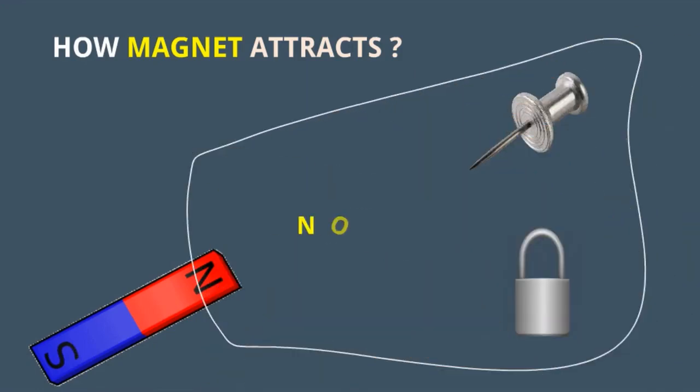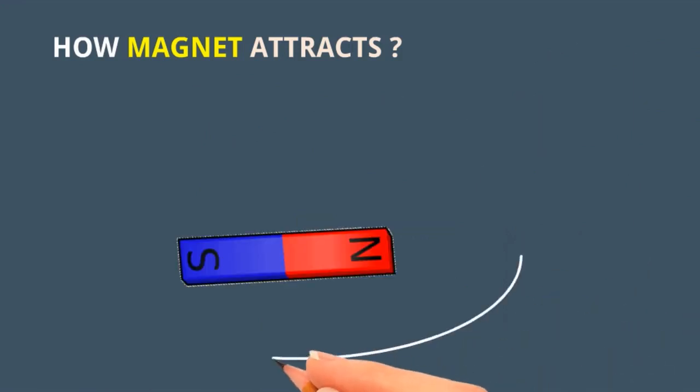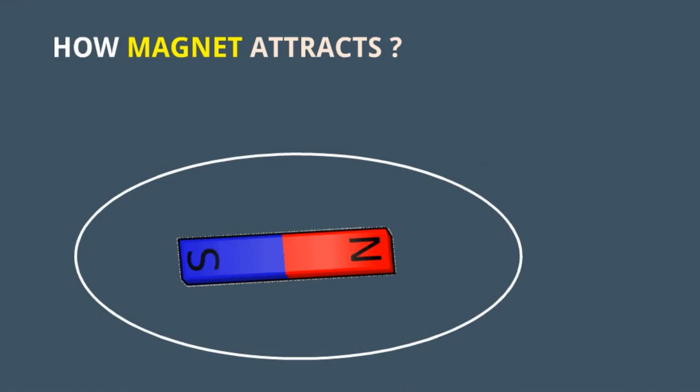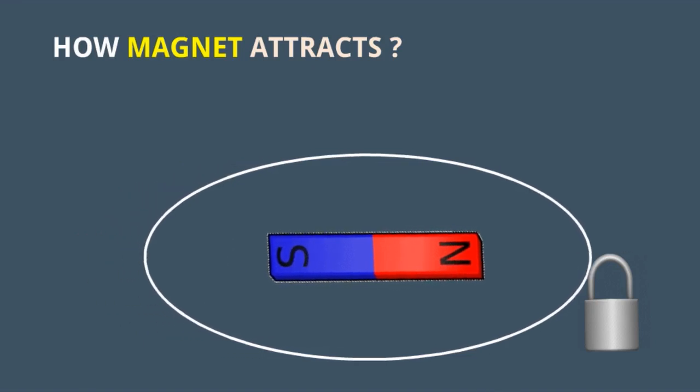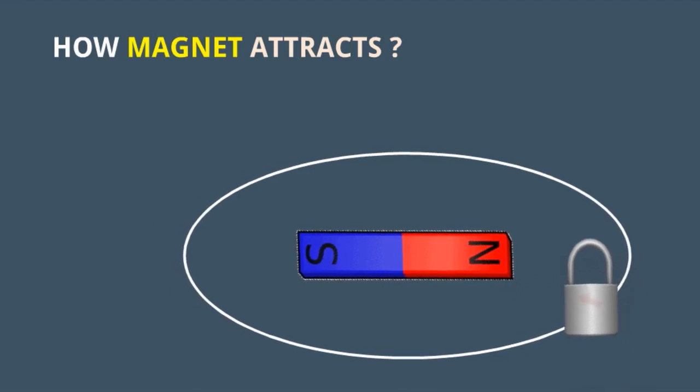See initially when lock is not within this circle it is not attracted, but when it is coming closer to the magnet then it will start to move. So around the magnet there is a force by which magnet attracts other metals at distance. It will be stuck to the magnet.